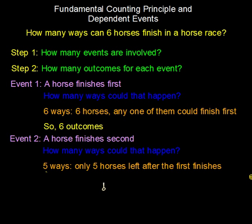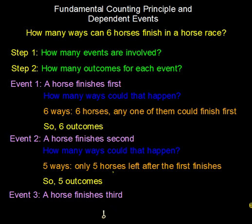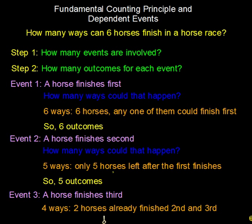Are there any more events before we figure out the total number of ways six horses can finish? Yes, there are more. Event three is that a horse finishes third. How many possible ways could a horse finish third? I believe there are four ways — two horses have already finished, and since there are six total horses, there must be four possible ways a horse could finish in third place.